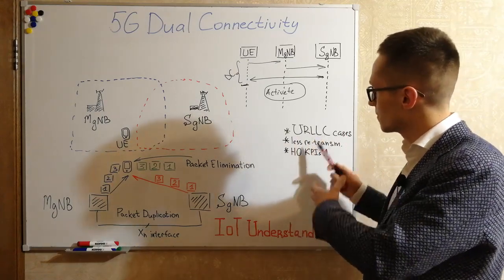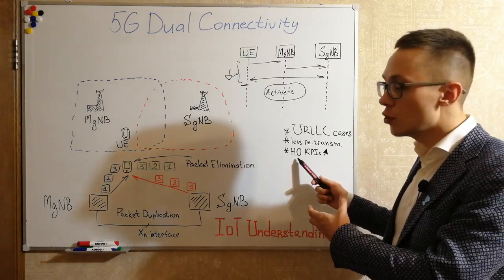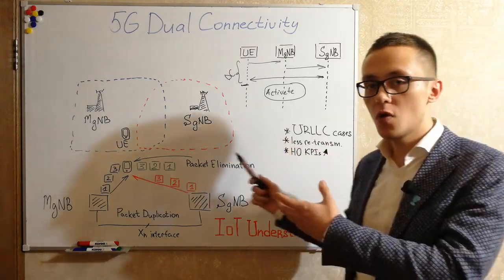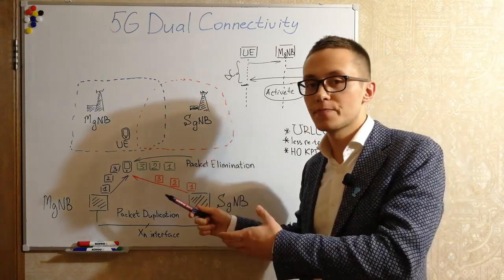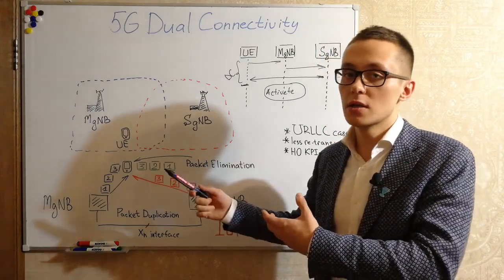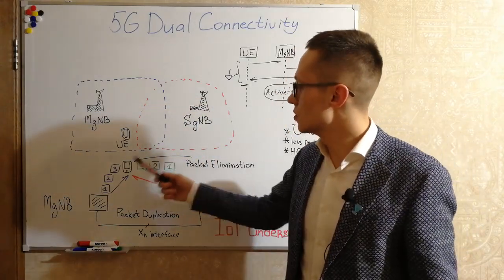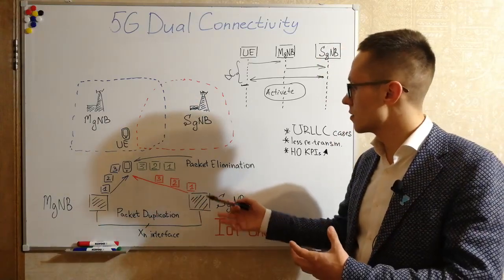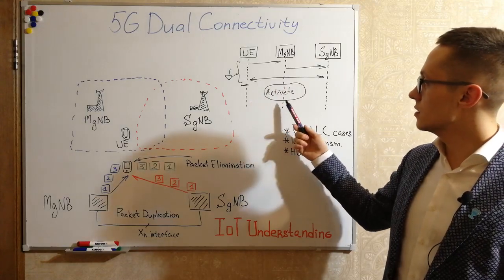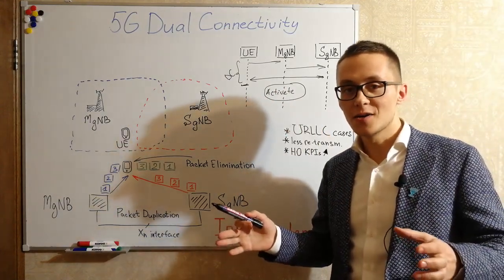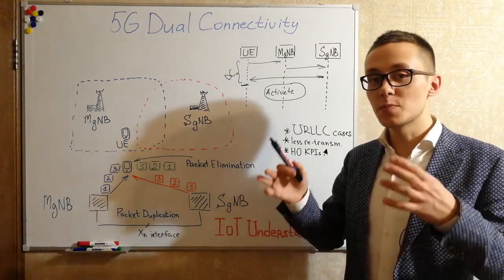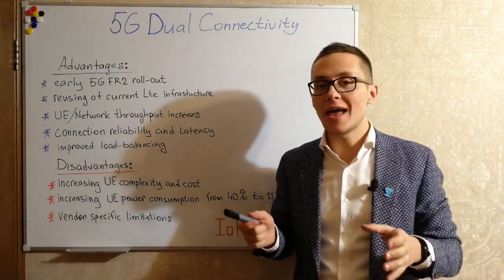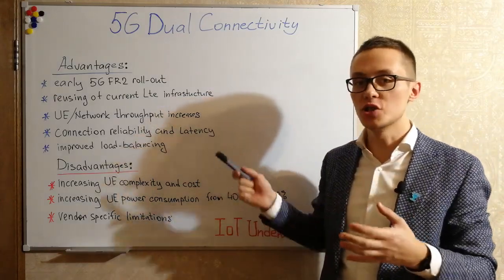This may improve handover KPIs because it can lead to fewer retransmissions on the MAC layer and on the RLC layer due to radio link failure. By duplicating information, the user equipment receives the best copy, which also helps reduce latency. This technology goes hand in hand with split bearer.